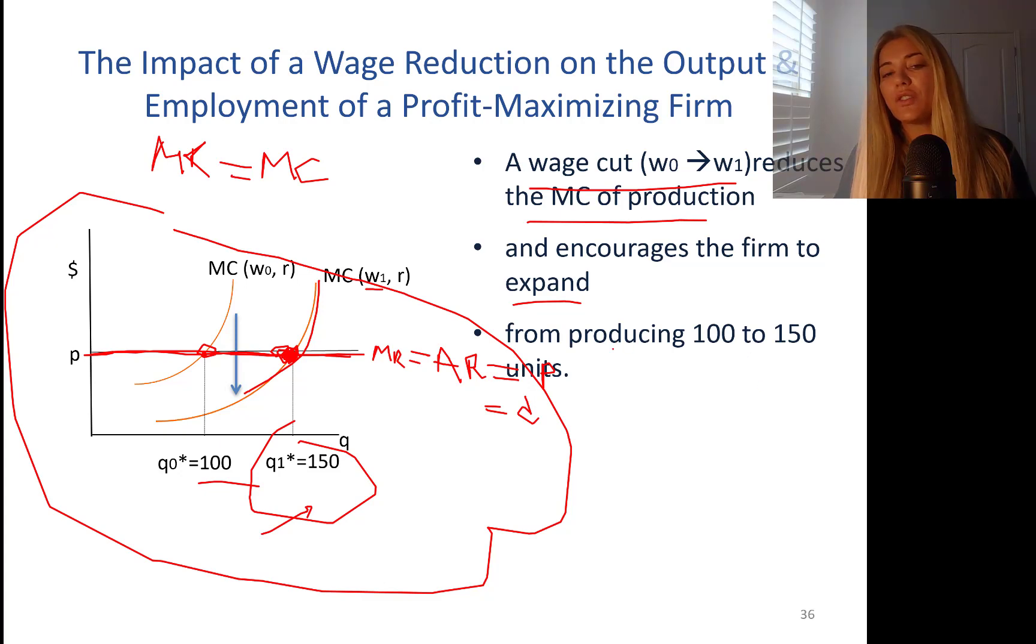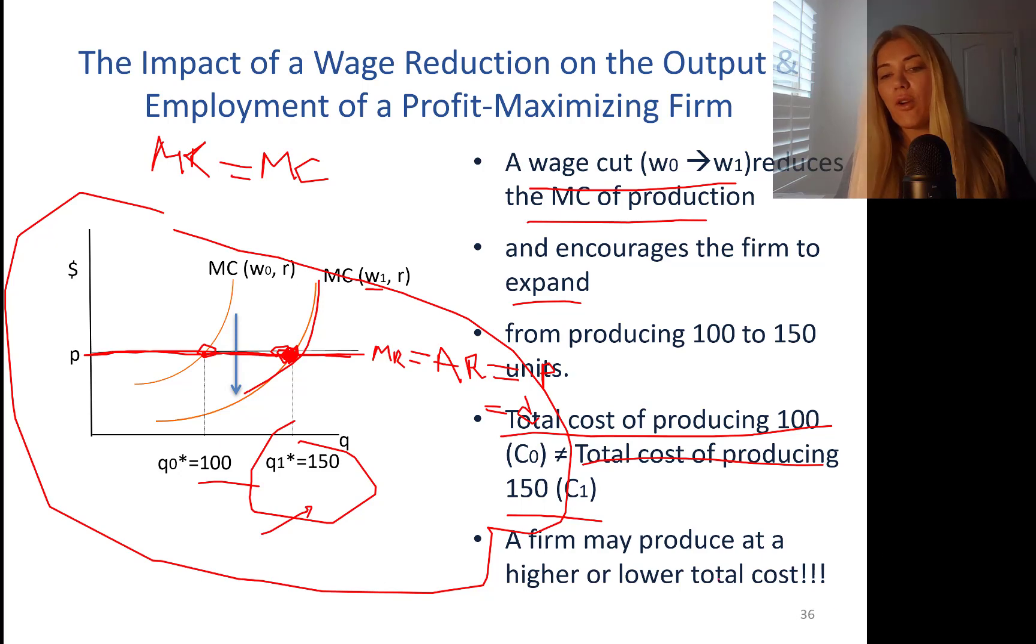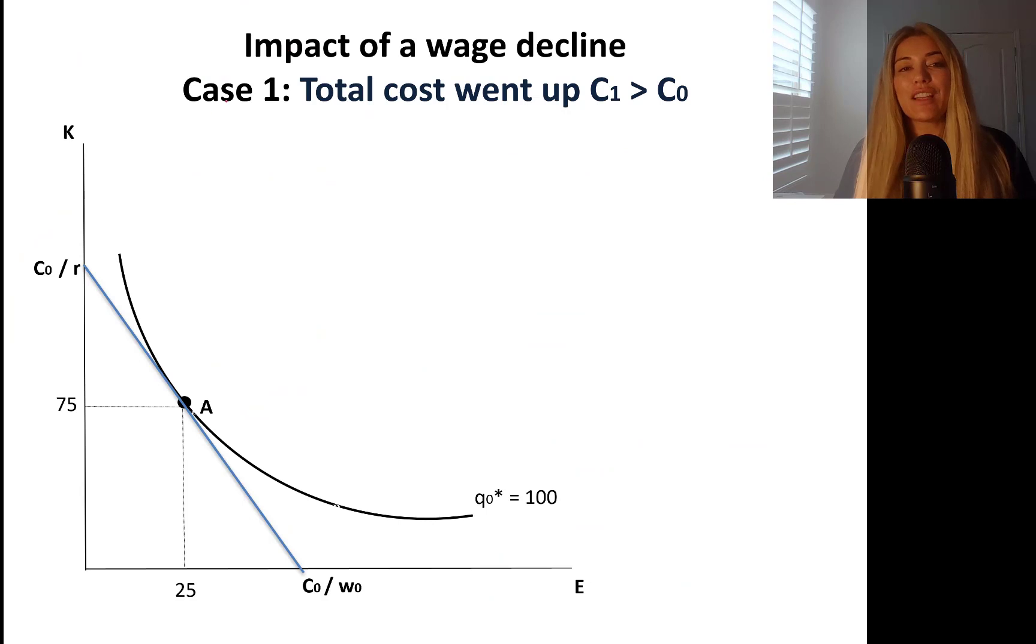From producing 100 to 150 units, now you are actually going to see maybe an increase in cost. Total cost of producing 100 units is not equal to the total cost of producing 150 units more than likely. The total cost can exceed C1. The new C1, total cost, can exceed the original C0. Or, it could be less than that. A firm may produce at a higher cost or lower cost. Let's see. We have two cases.